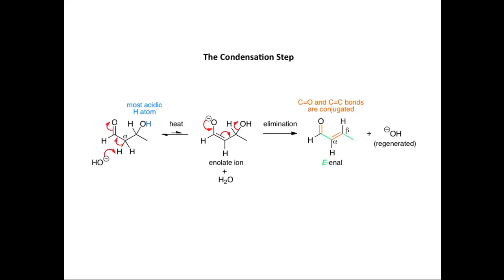We don't normally think of hydroxide ion as a good leaving group, but in this particular case it is a good leaving group because the product is so stable. The enal contains a C=O double bond and a C=C double bond that are conjugated — a double bond, single bond, double bond system — so there's a good driving force for eliminating the hydroxide ion to form this very stable conjugated system. Hydroxide ion is regenerated in this reaction, so it acts as a catalyst. The stereochemistry of the enal is E — we don't get any of the Z isomer because the E isomer is more stable, with the bulky substituents on opposite sides of the carbon-carbon double bond.